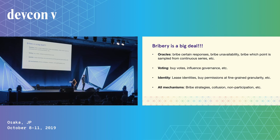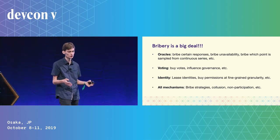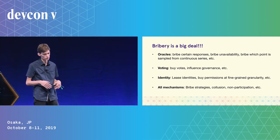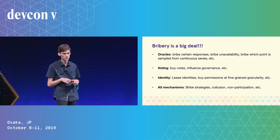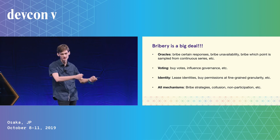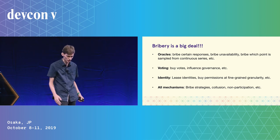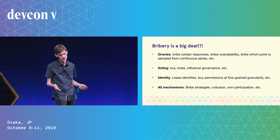Bribery is a huge deal in all the systems we're building. If you're building an oracle, you can bribe people to provide certain responses, go offline, or choose which point in a time series they sample. In voting or governance systems, you can buy votes or pay people not to vote. In identity systems, you can build anti-mechanisms that lease identities or partition capabilities. For all mechanisms, you can bribe players to take certain strategies, collude, or not participate.